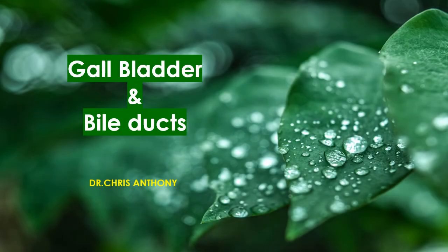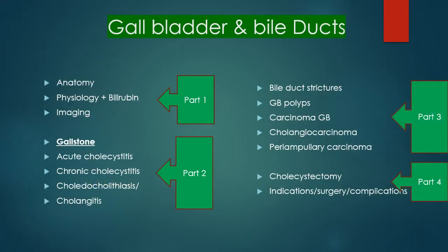Today's lecture is on gallbladder and bile ducts, divided into four parts. Part 1 covers anatomy, physiology including bilirubin metabolism, and imaging. Part 2 covers gallstones and related gallbladder diseases. Part 3 covers other gallbladder diseases including bile ducts, gallbladder polyps, and malignancy. Part 4 briefly covers cholecystectomy — its indications, surgery, and complications.